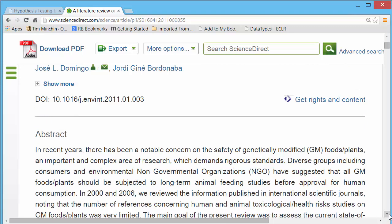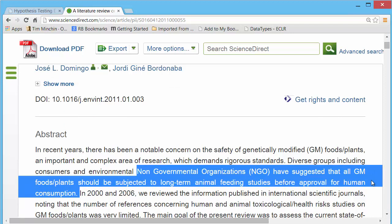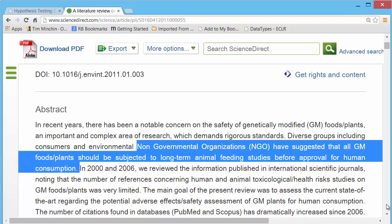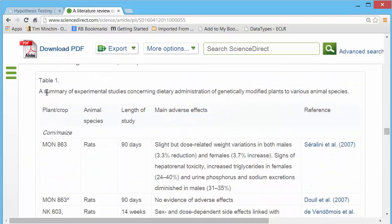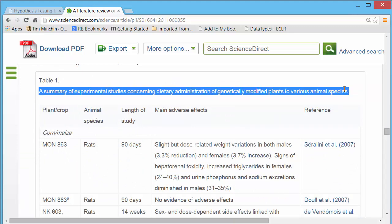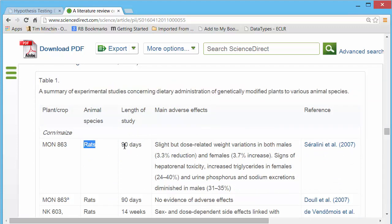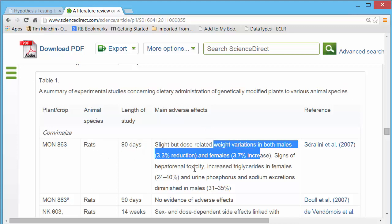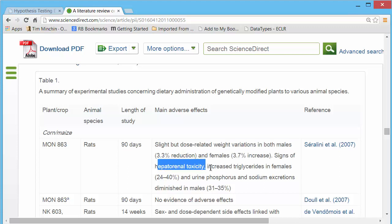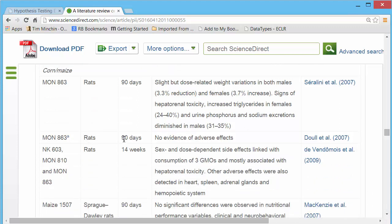There's basically been a demand to test GM food on animals to make sure it's safe for humans. Here's table one that summarizes a few of the existing studies. They're usually on rats, 90 days, so it's longitudinal. In this case, they found some variations or differences between the animals that were fed GM food compared to those who were not fed GM food. You can see there are different studies, rats mostly, different periods over which they were monitored.